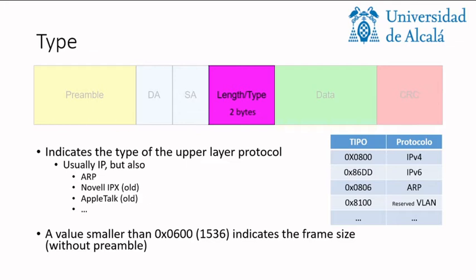When this field indicates the size, when we have a value smaller than this one in hexadecimal which is 1536, if the value is smaller than this then we know that this doesn't represent the type but it represents the length instead. This is just kept for compatibility, just in case that we have frames with different formats and different versions. So any type should be higher than this value. As you can see here all of them are higher than that value.